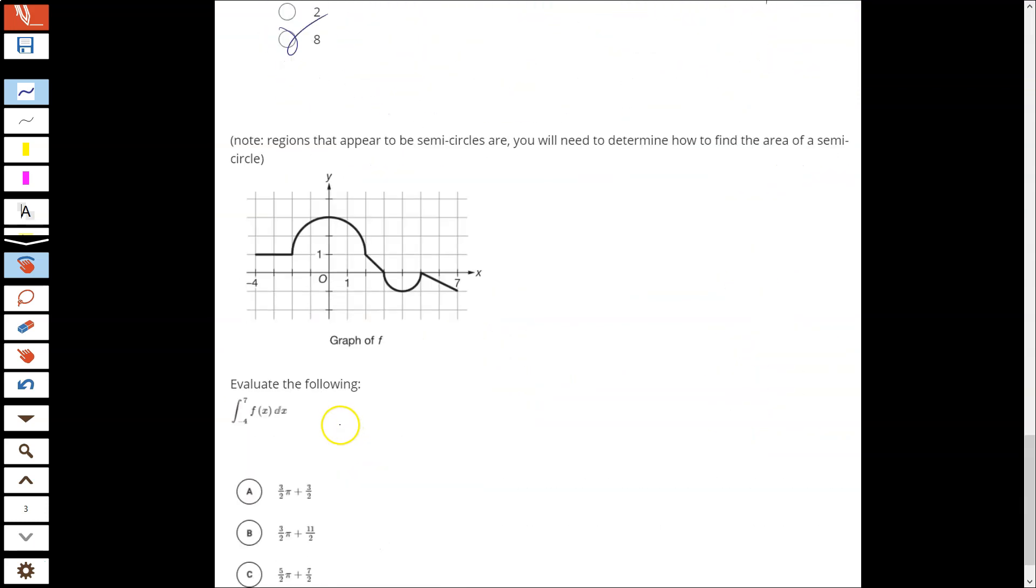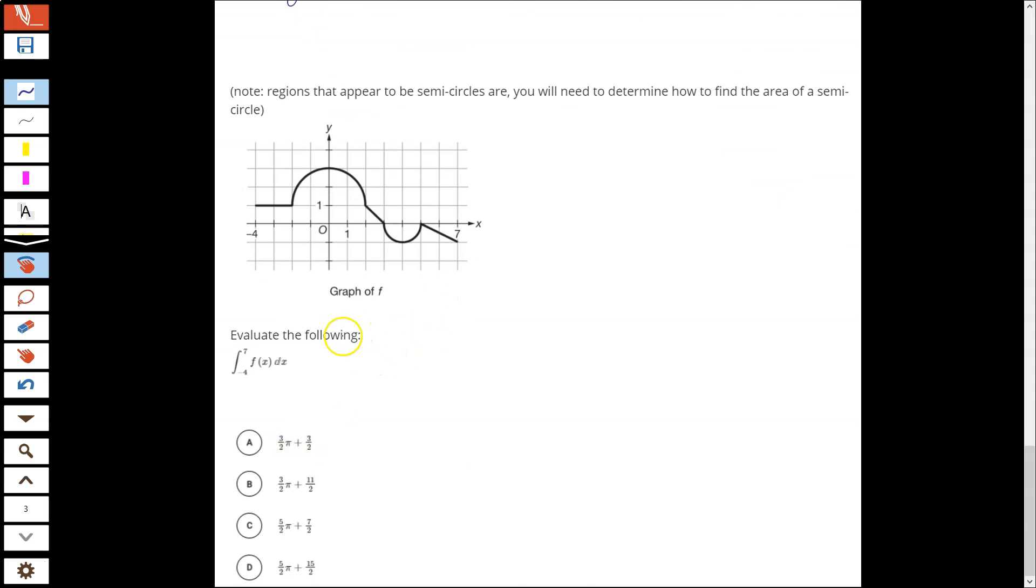Okay, last one is another area problem. And this one looks scarier than it is. So we're evaluating the integral, and the integral is going to be the area under the curve. And we can chop this one up in a number of different ways. Let's start by figuring out what our bounds are. So negative 4 to 7. That's negative 4 on the left, all the way to 7. So it's this whole curve. And we can chop it up in a number of different ways. Notice that I tell you that these semicircles are indeed semicircles. So area of a circle is πr². A semicircle would be half of that. So 1/2 πr². So we'll use that formula. And then everything else seems to be a pretty simple shape. There's a couple different ways I can cut this up. I'm going to show you what I think the easiest way to do it is.